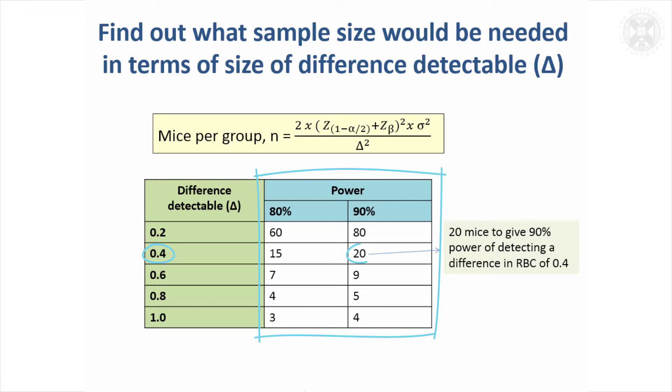If you wanted to detect 0.4, you would need 20 mice per group. If you wanted to detect a very small difference of 0.2, you're going to need 80 mice per group for 90 percent power. That's perhaps getting quite unrealistic. It can be helpful to look at different situations.